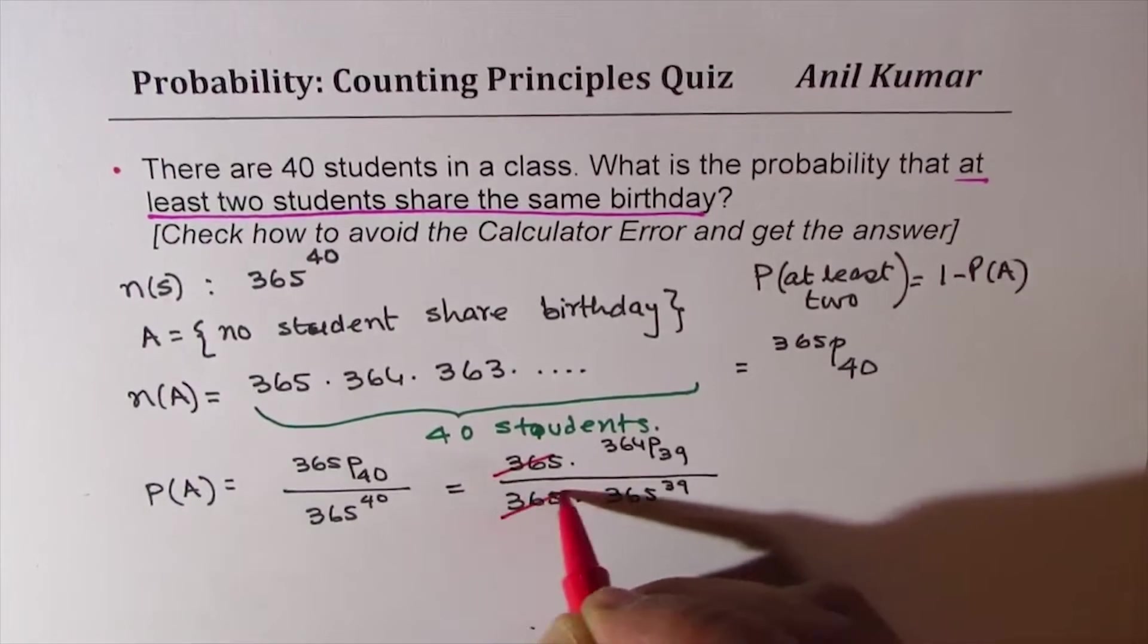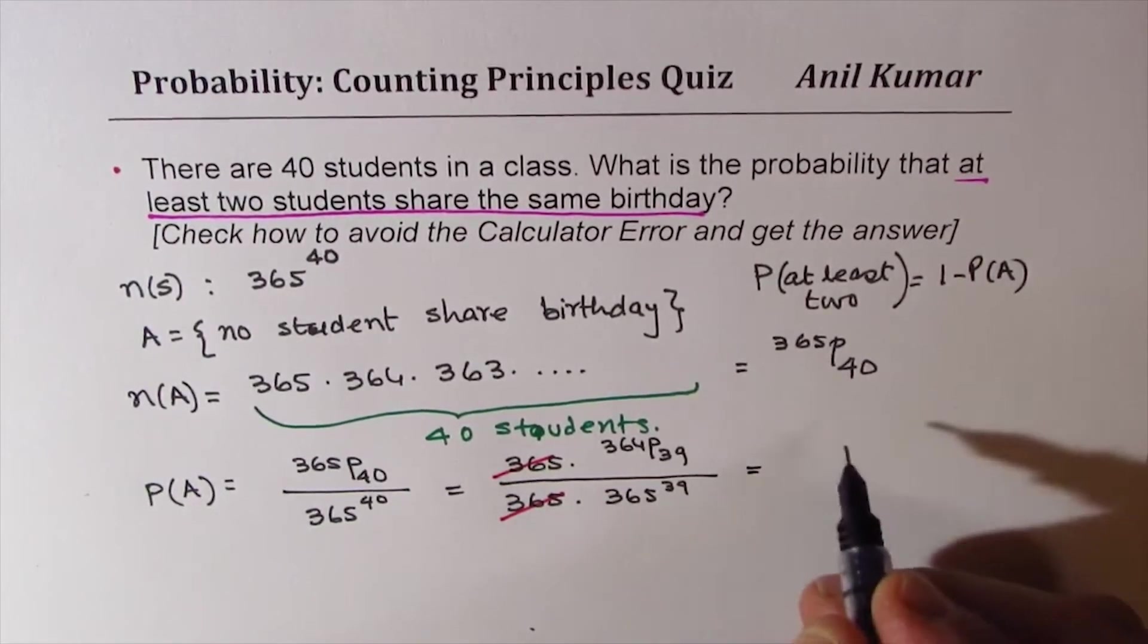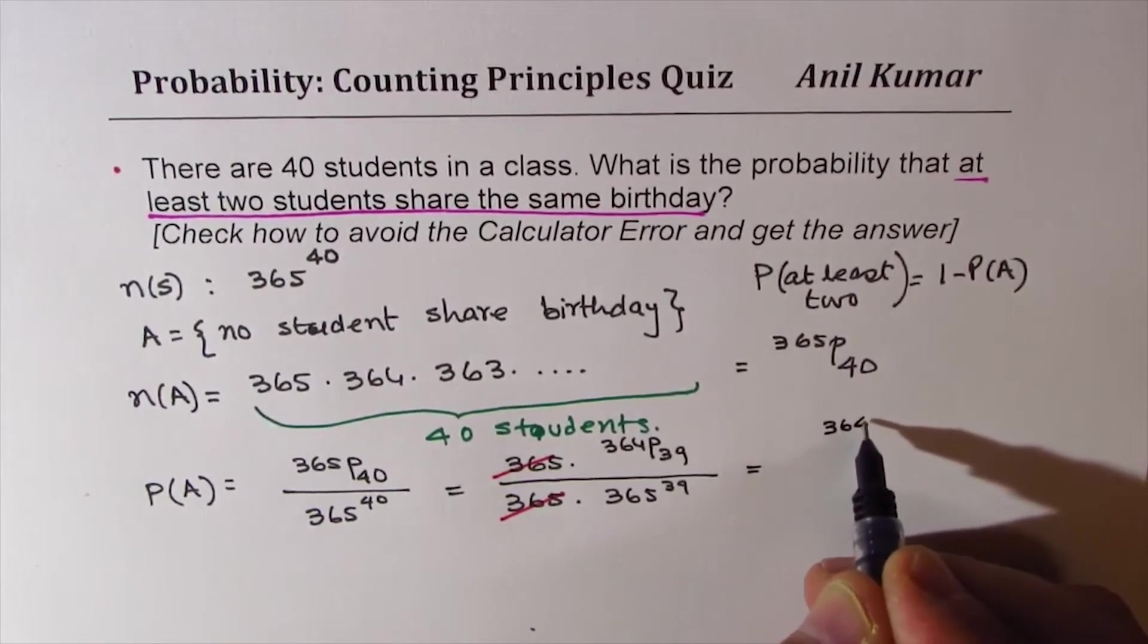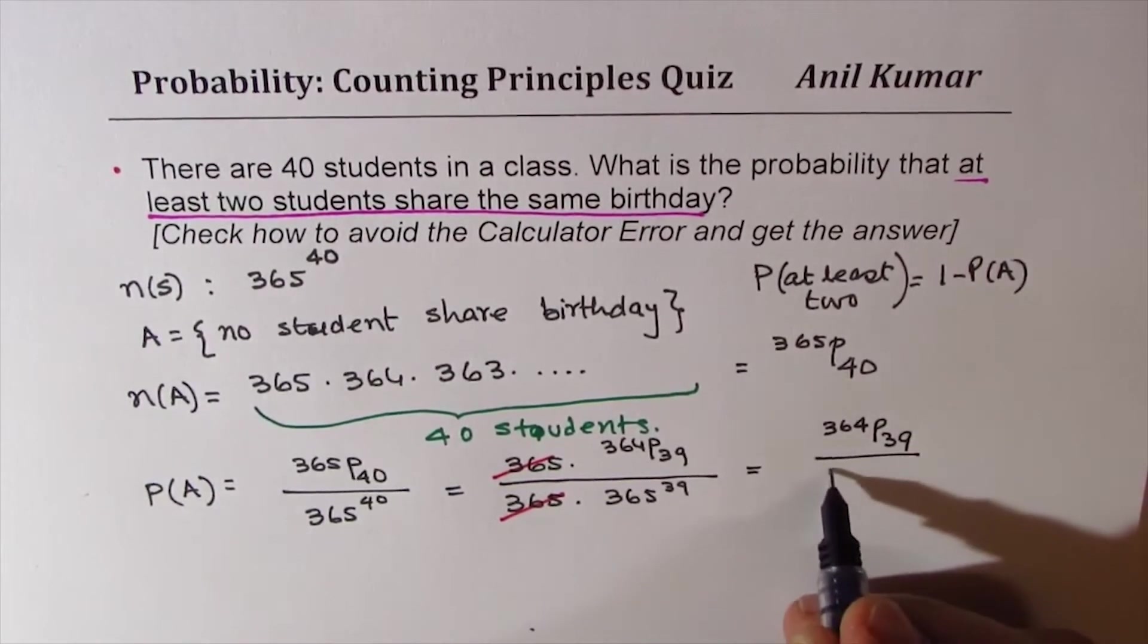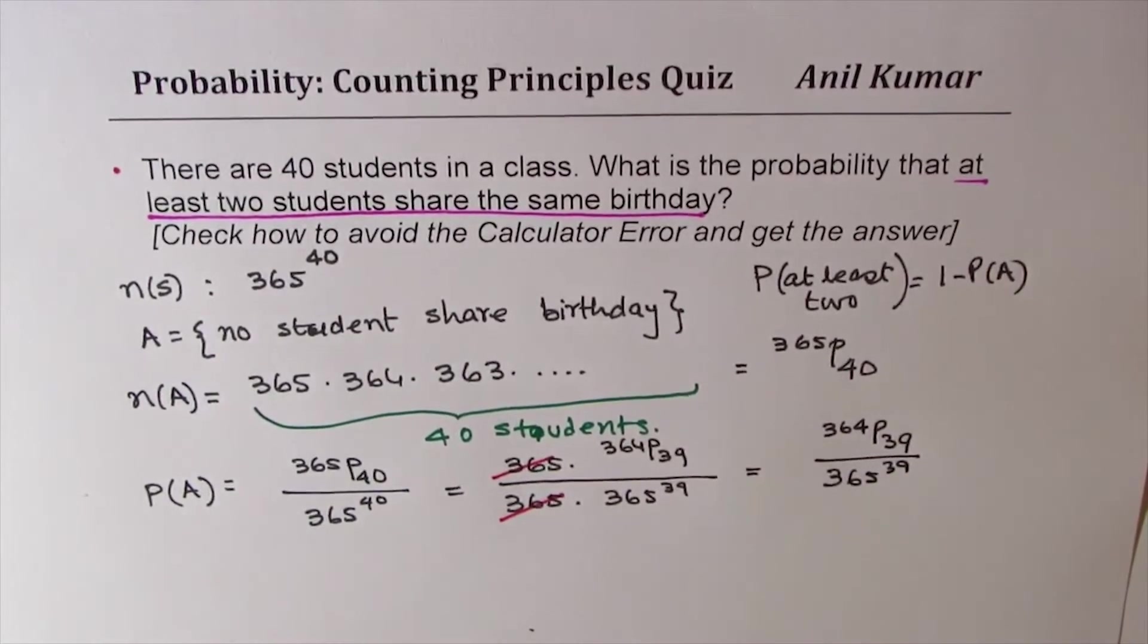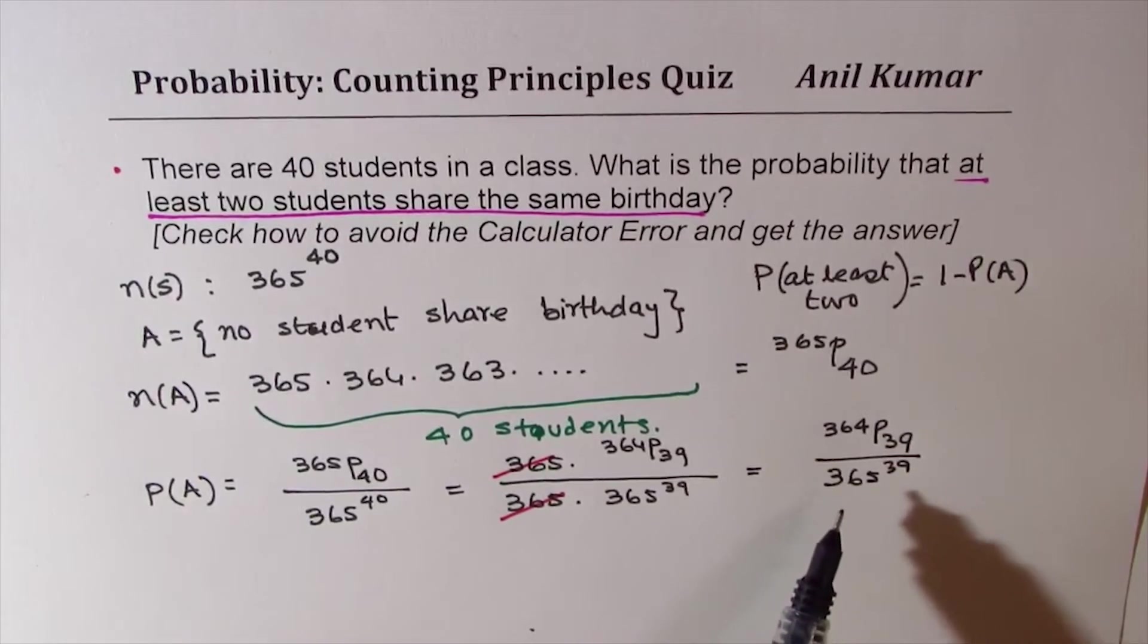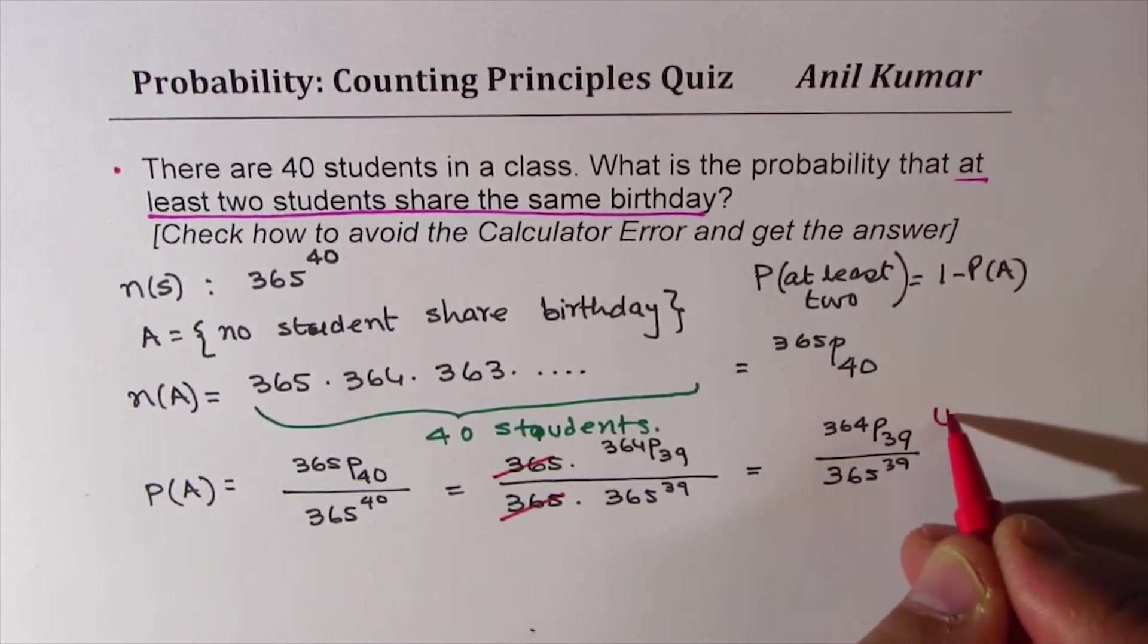So we cancel these 365. And what we remain with is 364P39 in the numerator divided by 365 to the power of 39. Now that number is not that large. And you can use calculator to find it. So that is the probability of unique birthdays.